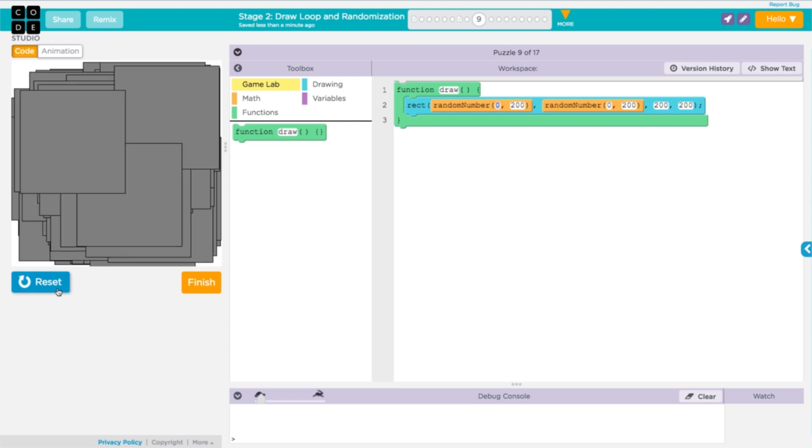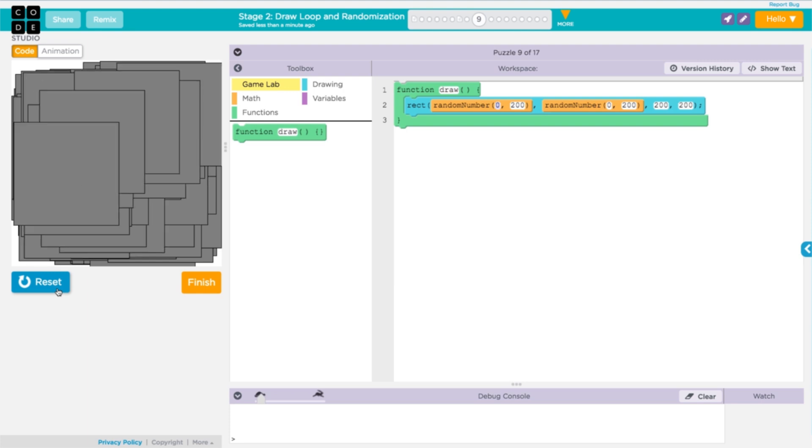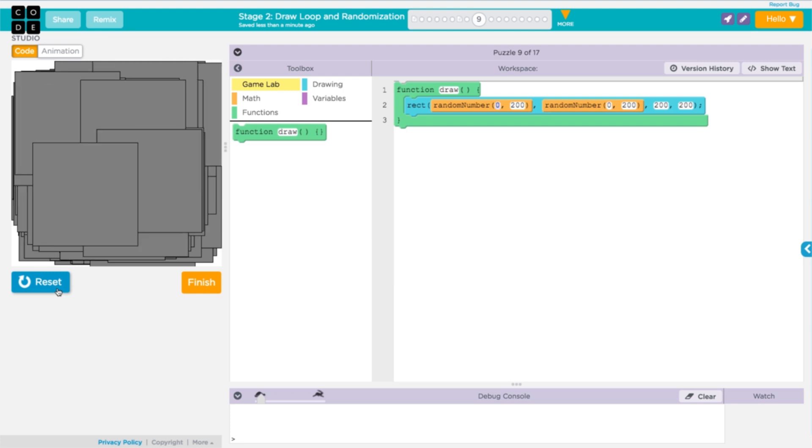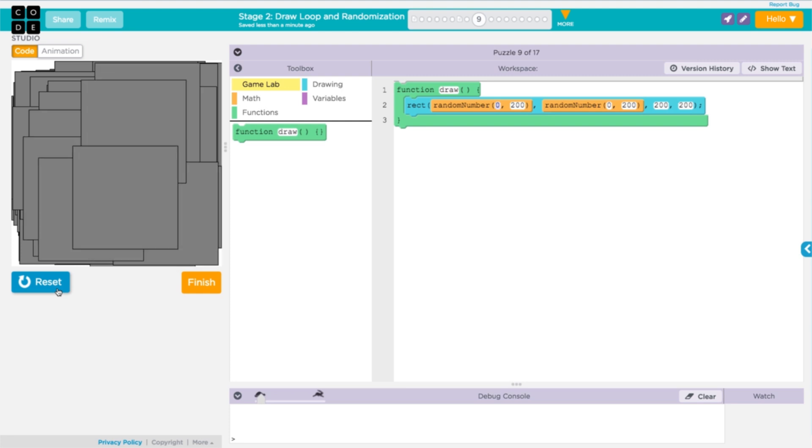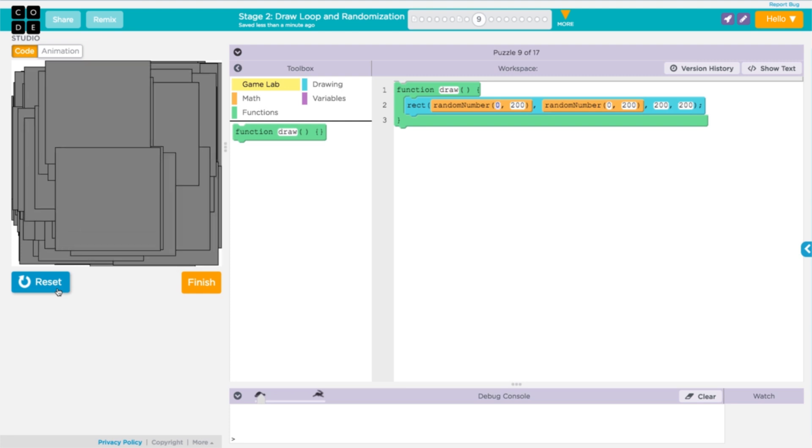Game lab is automatically calling the commands inside of the draw loop many times a second. In this program, that means that a new random X and Y location is generated and then a rectangle is drawn over and over and over.